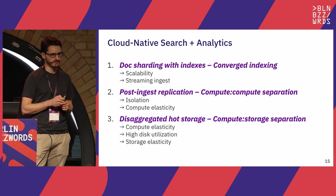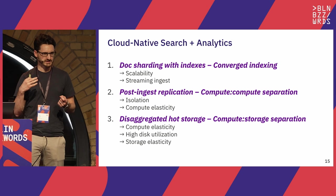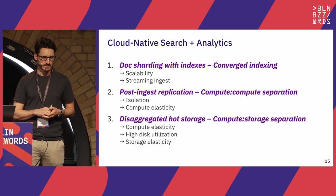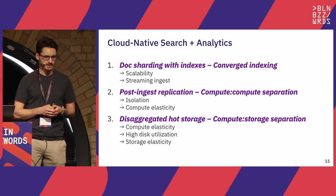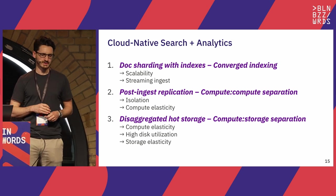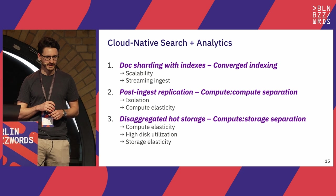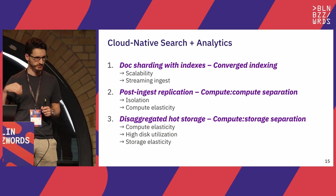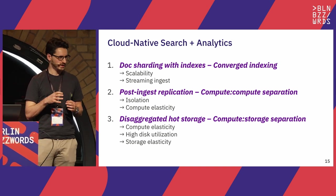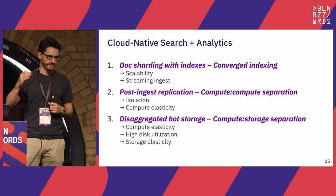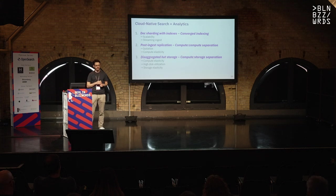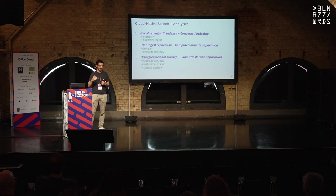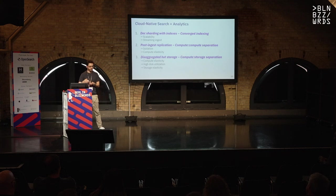Rockset is a cloud-native search analytics database. The design has three main technology pillars: first, doc sharding with indexes — we call this converged indexing — giving us scalability and efficient streaming ingest. Second, post-ingest replication — compute-compute separation — giving us isolation between query and ingest and compute elasticity. Third, disaggregated hot storage — compute-storage separation — giving us compute elasticity, high disk utilization, and storage elasticity.